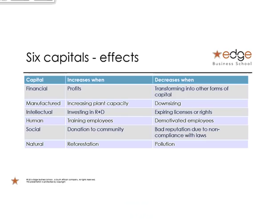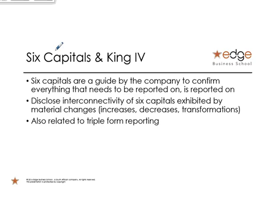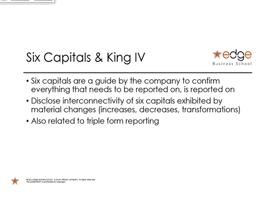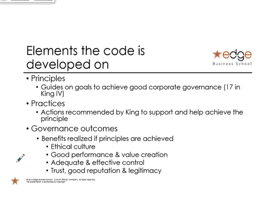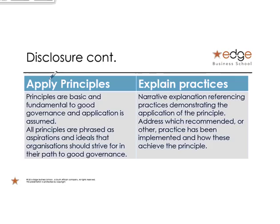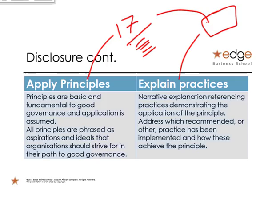How you increase and decrease them is quite straightforward. You can include it in your reporting and show how you've made a difference — sustainability, all those lovely words, incorporated within those principles. The principles are the chapter headings — those 17 — and the recommended practices are the explanations for each principle. You apply the principles, which are the 17 headings, and you explain your practices — how you achieved each of those 17 goals.